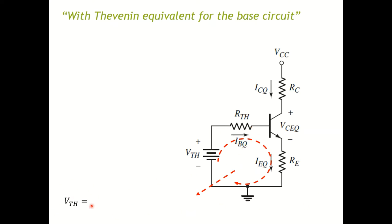First, if we analyze this loop, we have the Thevenin voltage equal to—now we start with this branch here—so the first voltage will be the voltage across this resistance, so we have IB base current multiplied by the Thevenin resistance.